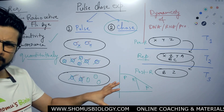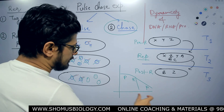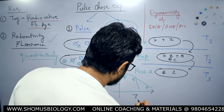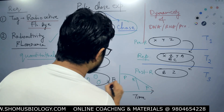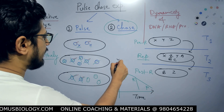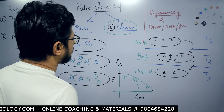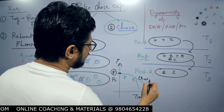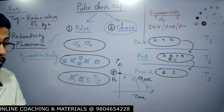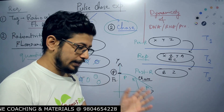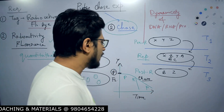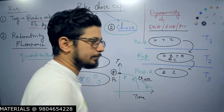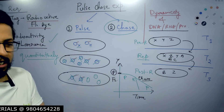There are graphs you might get. In this graph, we have time on the x-axis and fluorescence or radioactivity on the y-axis. You can see that the fluorescence is first generated due to the pulse, and then this is the chase part. In the chase part, the fluorescence will definitely drop. But how exactly it modifies and changes will help us understand the dynamic nature of macromolecules like DNA, RNA, and proteins inside the cell.